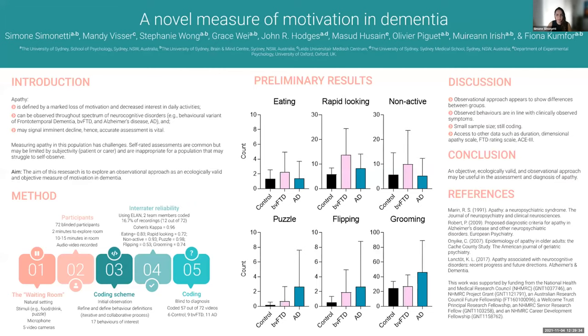Our next speaker is Simone Simonetti, talking about a novel measure in dementia. This poster is really about exploring whether we can observe behavior and use these observations as a measure of motivation in dementia. Participants were told that an experiment was running late and they'd have to wait in a waiting room with stimuli around them — food, drinks, puzzles, magazines and games.